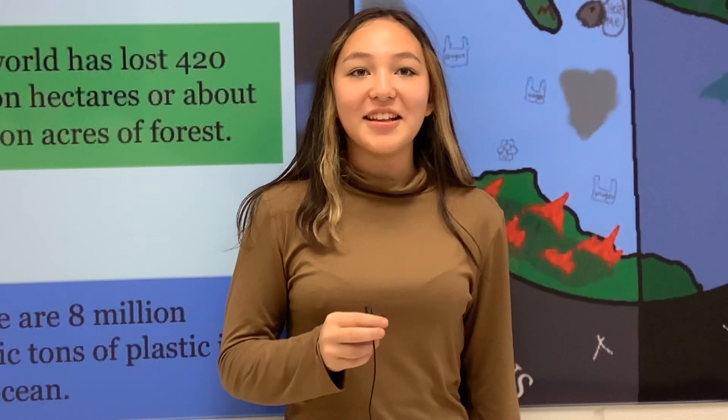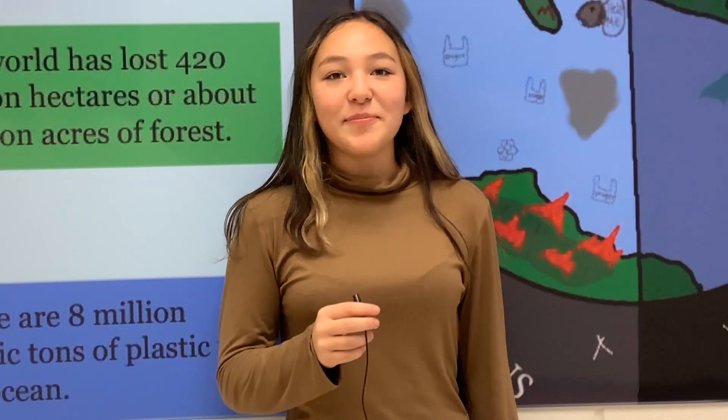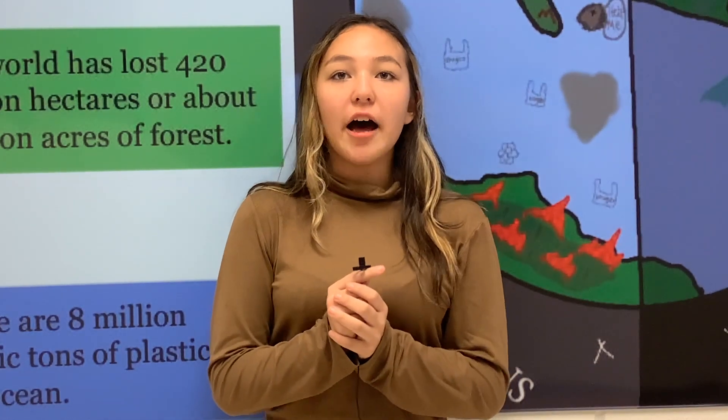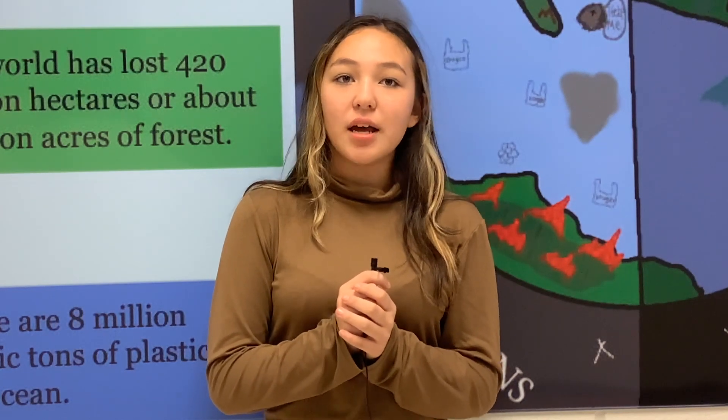Congratulations to Karam for getting the correct answer to last week's riddle. When is it bad luck to see a black cat? The answer is: when you're a mouse! This week's riddle is: I have branches but no fruit, trunk, or leaves — what am I?